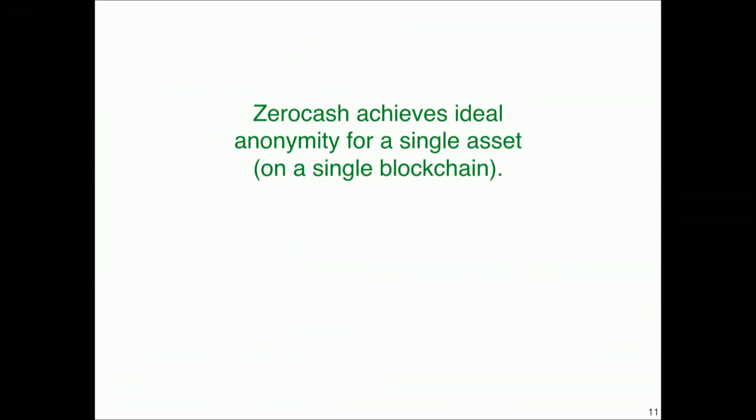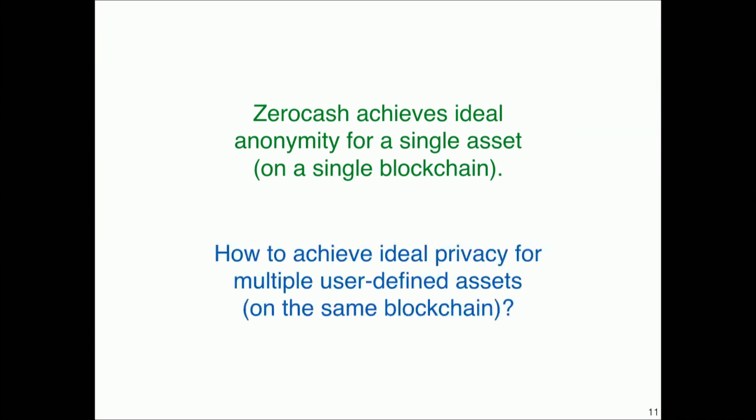So far, zero-cash achieves ideal privacy. Now we want to support multiple user-defined assets running on the same blockchain. A trivial approach would be to run an instance of zero-cash for each asset in parallel, but this is unsatisfactory because the anonymity pool would be split across assets — if your asset doesn't see much transaction volume, you don't get much privacy. So we want a system where each asset shares the same anonymity pool.